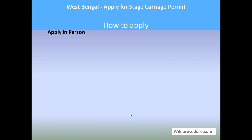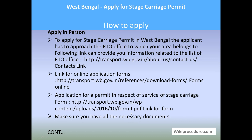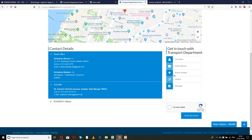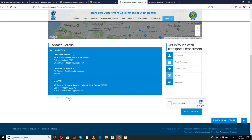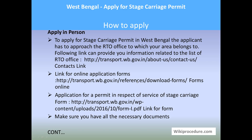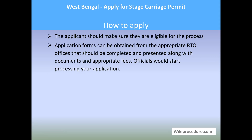Let us see how to apply in person. To apply for a stage carriage permit in West Bengal, one has to go to the local RTO office concerned for their area. If you don't know the address, click the contact link provided here — it will lead you to the contact page of the West Bengal state portal where you will get information about your area's RTO office. Select the particular RTO office and note the address. You can download the form from the link provided, and make sure you have all the necessary documents and that you are eligible before applying.